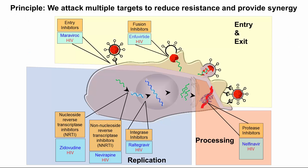Here is a depiction of the HIV replicative cycle. Note the three phases of HIV, which are antiviral targets: entry, replication, and processing. In contrast to anti-herpes virus drugs, where we only target one step in the viral life cycle — nucleic acid synthesis — with HIV it is important to target as many steps as possible. This will allow us to subvert resistance caused by errors in replication. Our take-home principle is that we need to attack multiple targets to reduce resistance and to provide synergy.